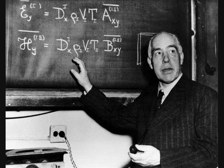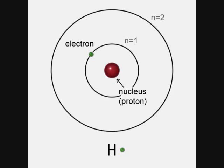Niels Bohr, in 1913, introduced a theory that said electrons occupy circular orbits around the nucleus. His model was later improved, but it gave the idea that electrons are quantized, meaning they only exist in certain energy states, and not between them.